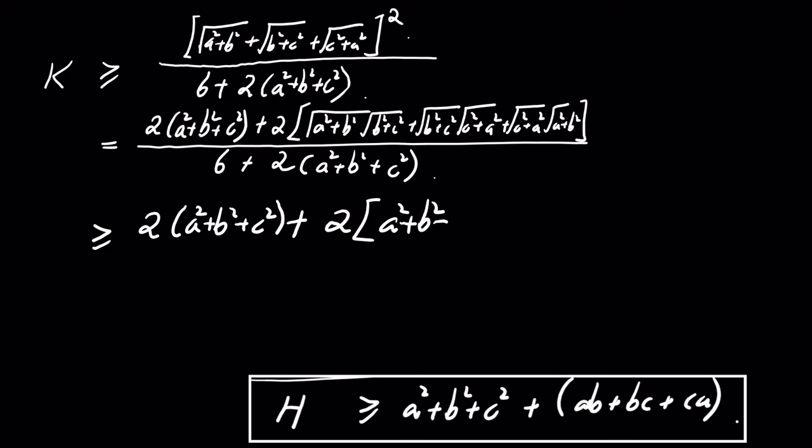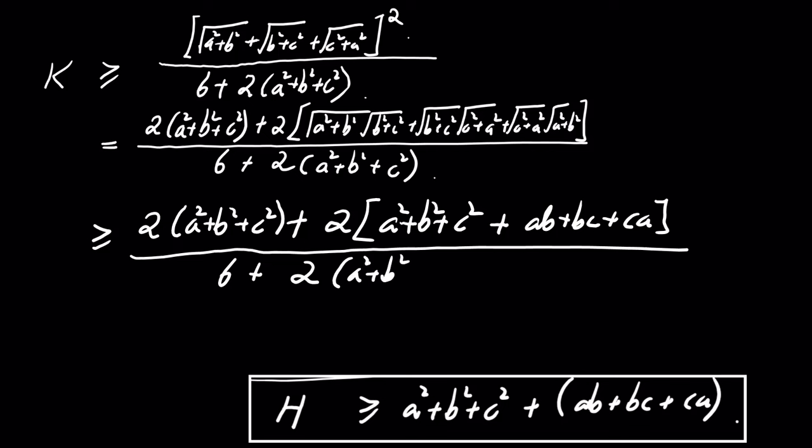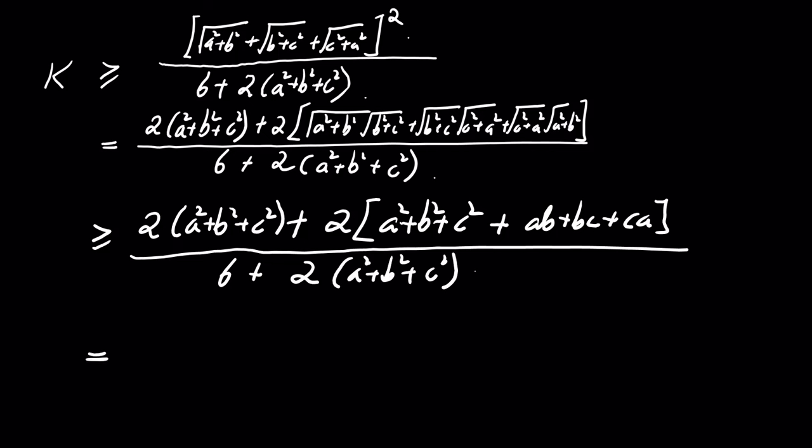With the bound on h in mind, we obtain: K is greater than or equal to 3 times the sum of A squared plus B squared plus C squared, divided by 6 plus 2 times the sum of A squared plus B squared plus C squared.